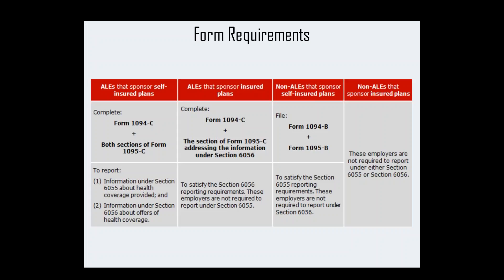Which forms do you have to report? An ALE — 50 or more full-time equivalent employees — on a self-insured plan completes the 1094-C and 1095-C. An ALE with an insured plan also uses the 1094-C and 1095-C. An employer under 50 full-time employees on a self-insured plan uses the 1094-B and 1095-B forms. So you'll hear 1094 and 1095 a lot, but there are different forms depending on your size and whether you're self-funded or not.